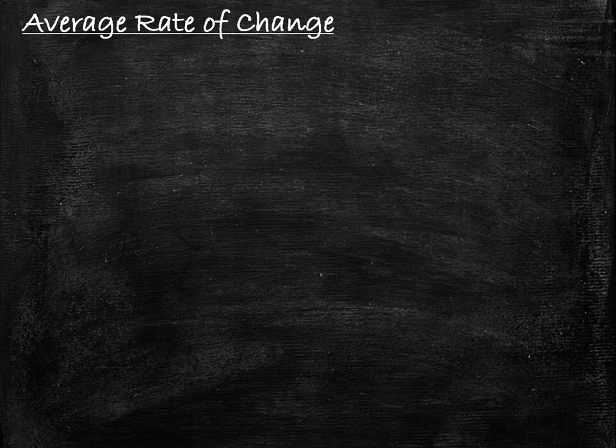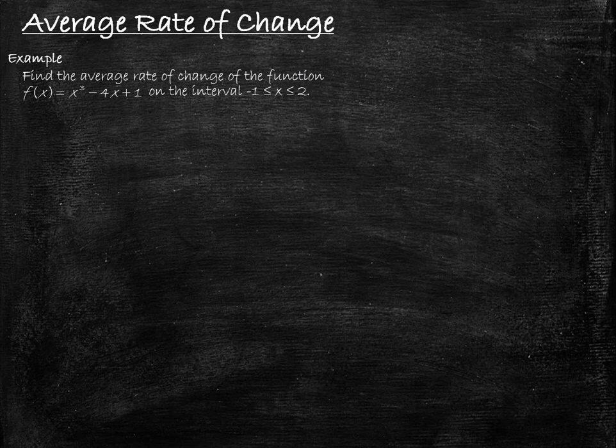Let's begin by taking a look at average rate of change. We are asked to find the average rate of change of the function f(x) = x³ − 4x + 1 on the interval negative 1 to 2. The thing to keep in mind when finding an average rate of change is that you're just finding a single slope, and that slope is the slope of what we call a secant line.